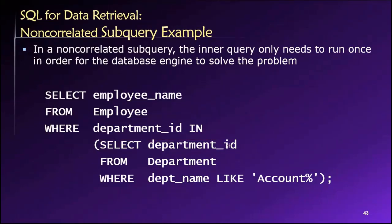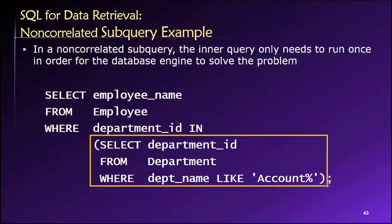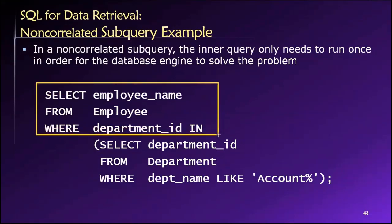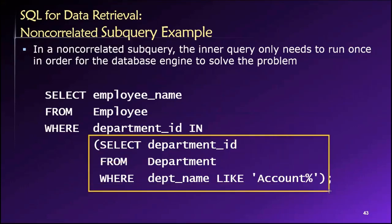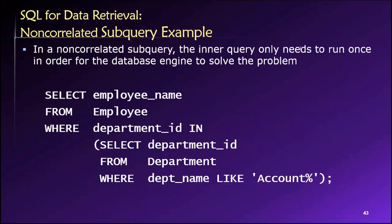This is a non-correlated sub query. In a non-correlated sub query, the inner select statement only needs to run one time in order for the database to answer the entire query. So I get a fixed answer from it — a set of department IDs like one and four — and that only has to run once in order to answer the outer part. The inner query only runs once.